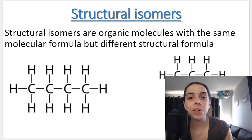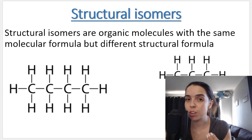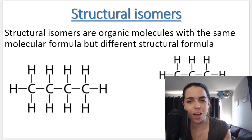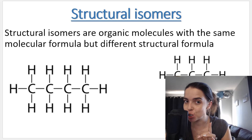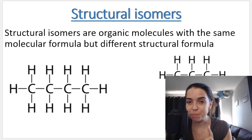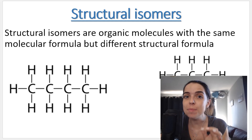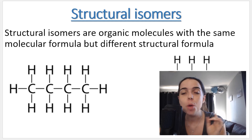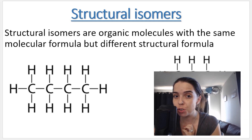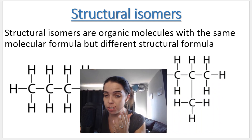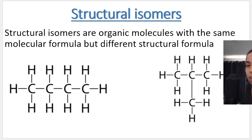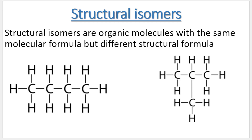The first thing you need to know is structural isomers. Structural isomers are organic molecules with the same molecular formula but different structural formulas. On the screen you can see two different organic compounds, one on the left and one on the right. They have very different structural formulas.